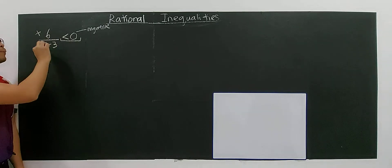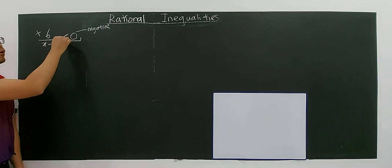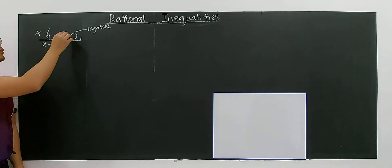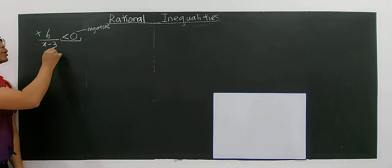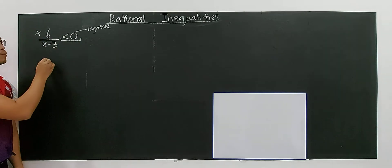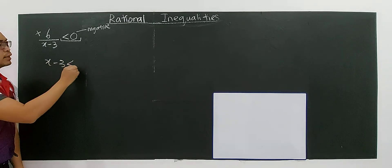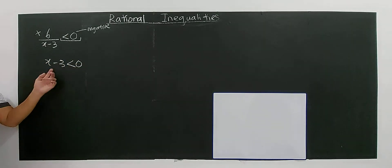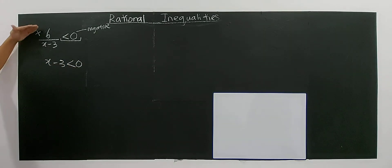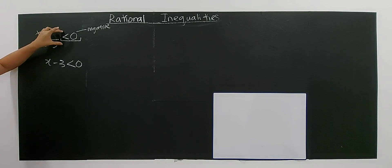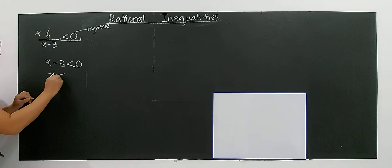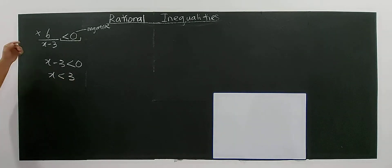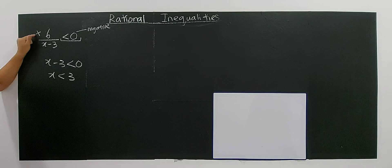If you're positive divided by a positive, it should be positive. So if this becomes negative, something below here — the denominator — must be negative. Why negative and not positive? Because positive divided by negative gives you negative. So the solution will be x less than 3. This is a solution for this rational inequality.